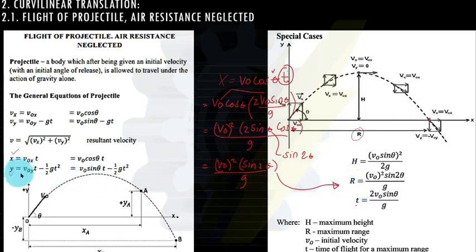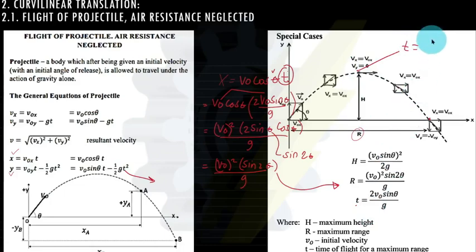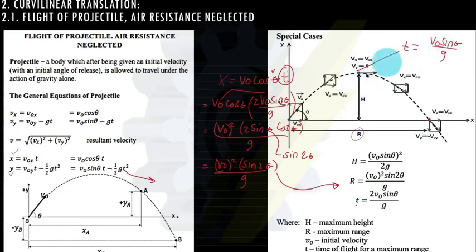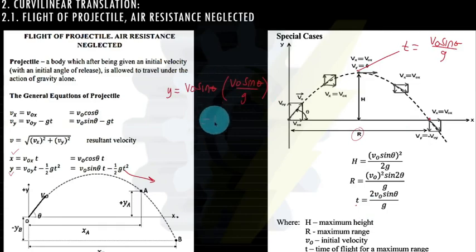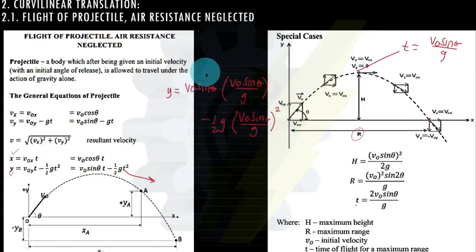Similarly, for maximum height h, we start from the y equation. Since h is reached at the halfway point of the total flight time, the time used here is half the total time: v sub o sine theta over g. We substitute this into the y equation: y equals v sub o sine theta multiplied by (v sub o sine theta over g), minus one-half g times (v sub o sine theta over g) squared.